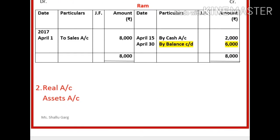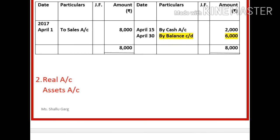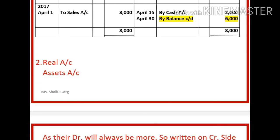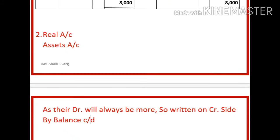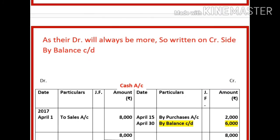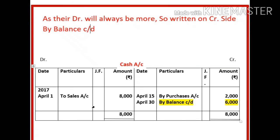The second type is the real account or assets account. Assets always have debit balances, so their balance will always be written on the credit side as 'by balance carried down.' For example, in the cash account, you have written 'to sales 8,000' and 'by purchases 2,000.' The balancing figure will be 6,000, representing the debit balance, and it is written on the credit side as 'by balance carried down.'